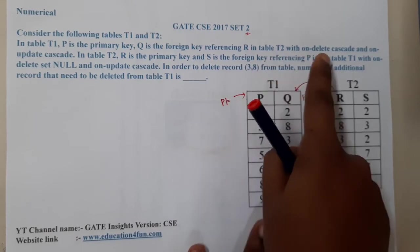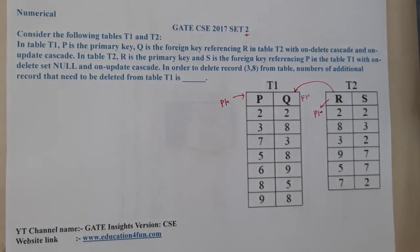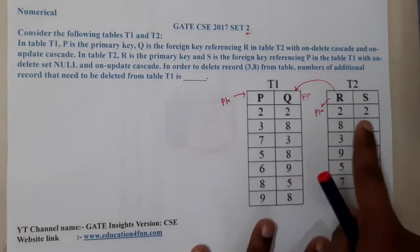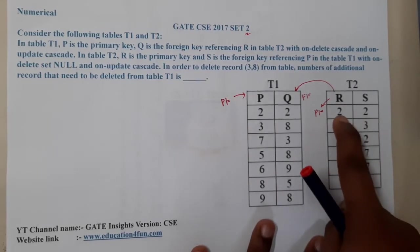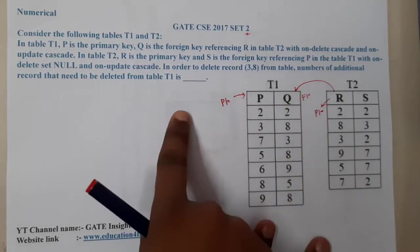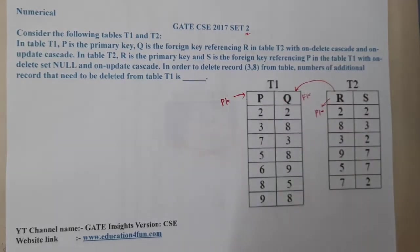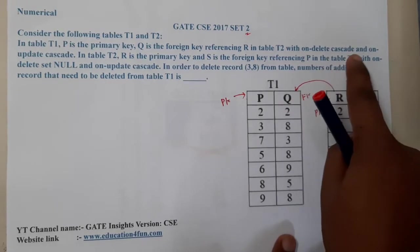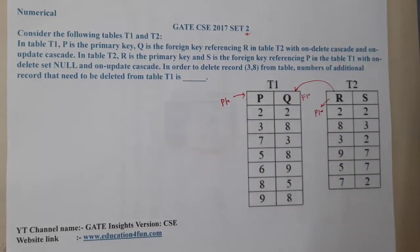Table T2 has ON DELETE CASCADE and ON UPDATE CASCADE. ON DELETE CASCADE means whenever you delete something in this table, the paired value in the other table will also be deleted. ON UPDATE CASCADE means if there is any update done here, that update will also take place in the other table.